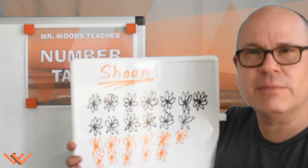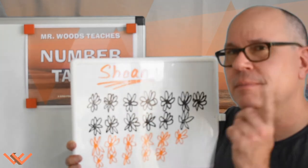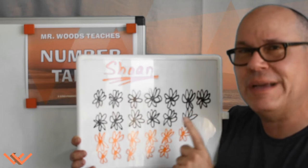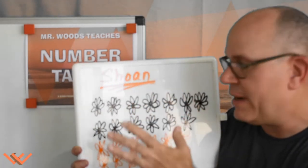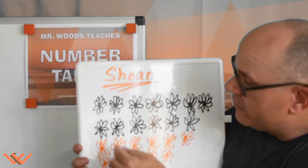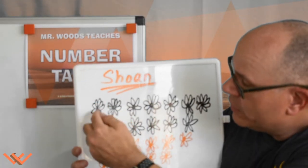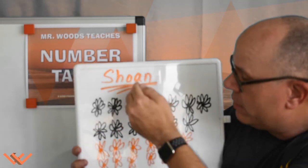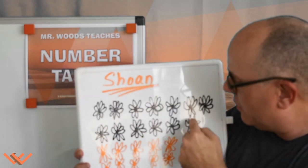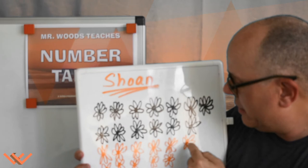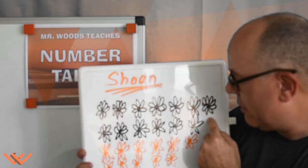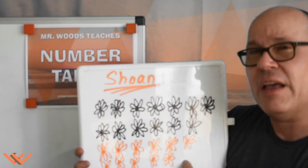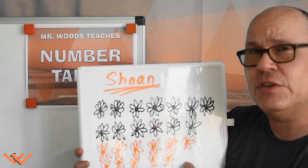Do you see any patterns emerging? Let's see what we can do to rearrange a few of these things. Because if you notice, there's one, two, three, four in this row, four in that row. And it comes down to here, and there's one, two, three. But there's only one in this row. Can we move that one down here? I think so. Let's do that.